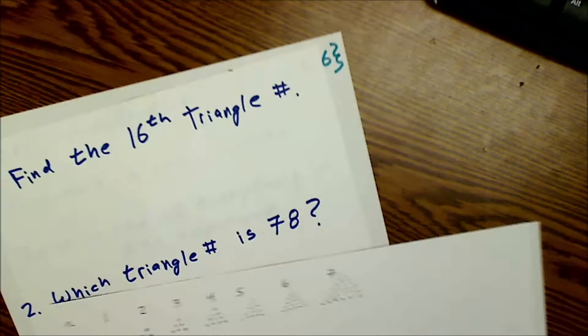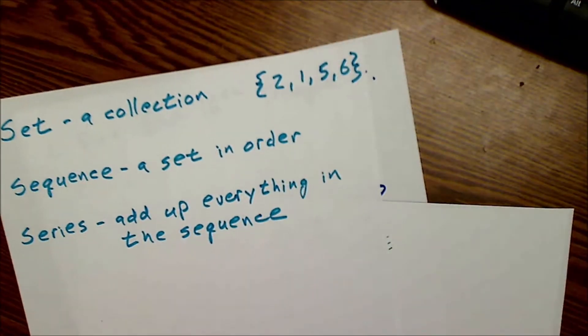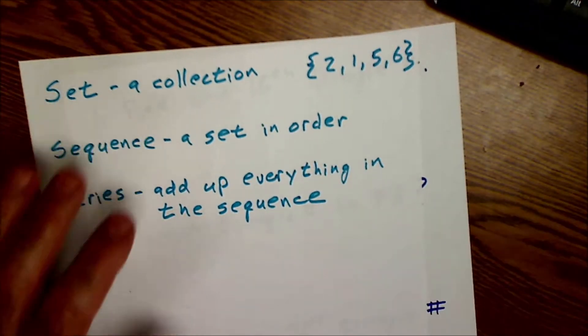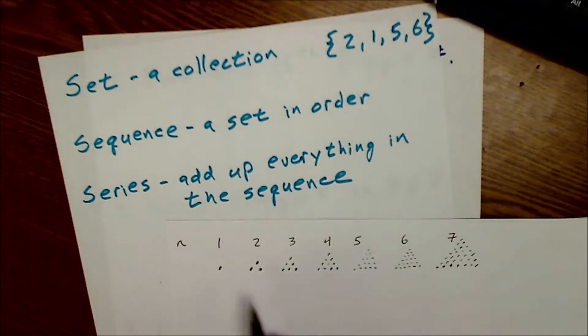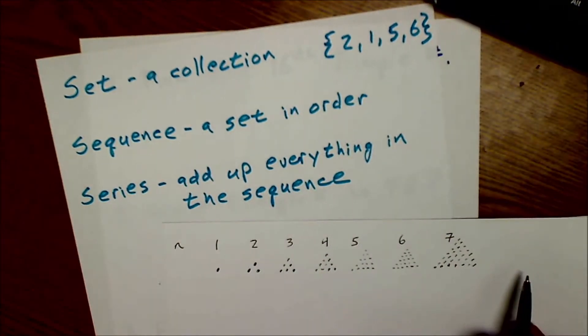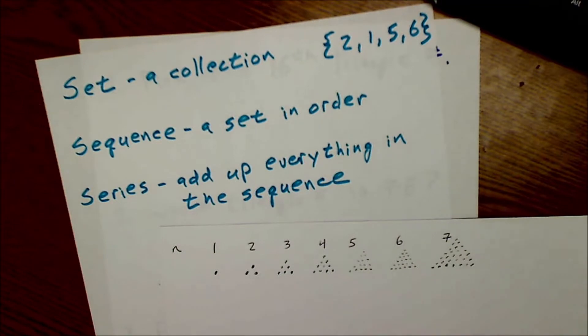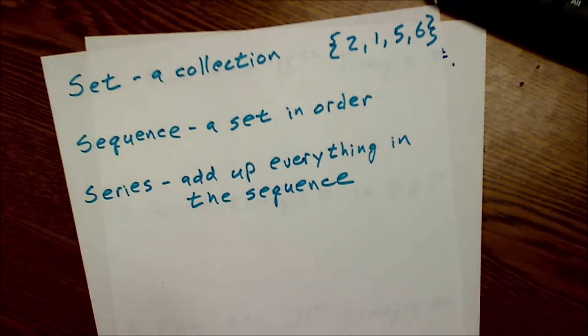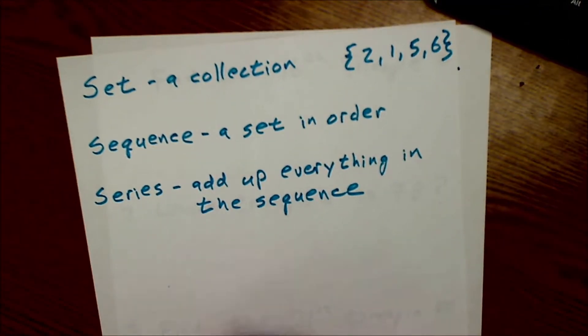This is in the branch of mathematics called sequence and series, and there's a few different ways to do this. One way is to draw out every possible triangle but you can see how long that's going to take. So before we go over these triangle numbers let me just go over a couple quick ideas in sequence and series.